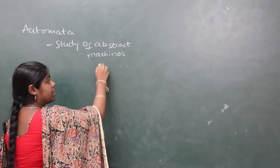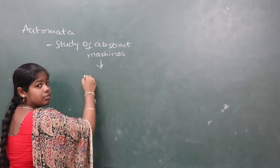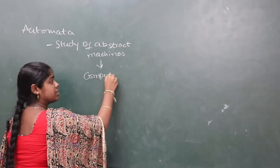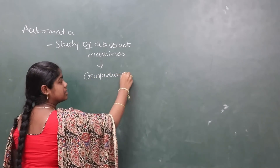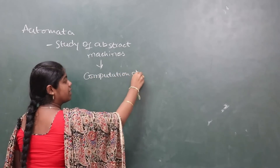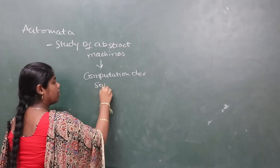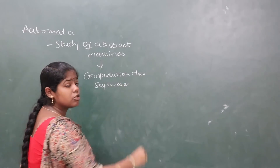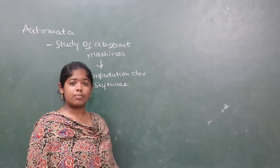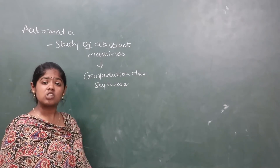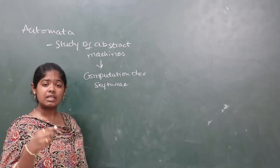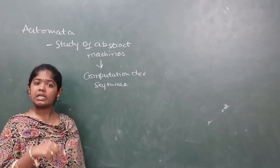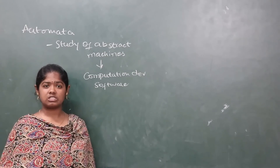What is an abstract machine? An abstract machine means some type of computational devices or some software which are used to solve many problems. If you construct a machine, you can see what input values are used to generate output.